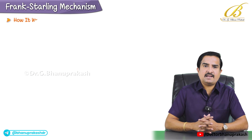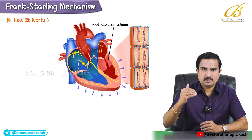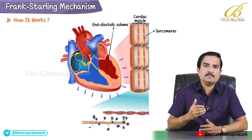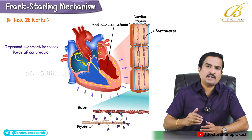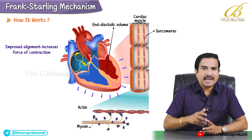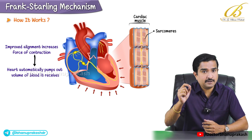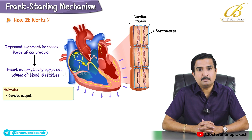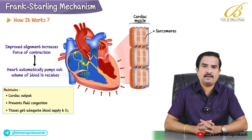Now let us discuss how this mechanism works. When the end-diastolic volume goes up, the cardiac muscle fibers — often referred to as sarcomeres — are stretched to a more optimal overlap between actin and myosin filaments. This improved alignment increases the force of contraction, thereby boosting the stroke volume. In essence, the heart automatically pumps out whatever volume of blood it receives, within physiological limits, helping maintain cardiac output, preventing fluid congestion, and ensuring tissues get adequate blood supply and oxygen.